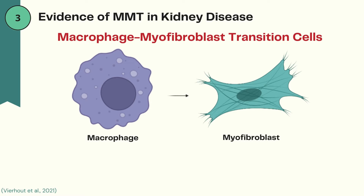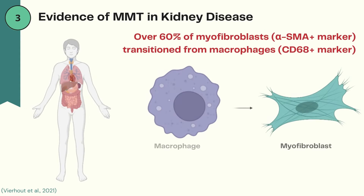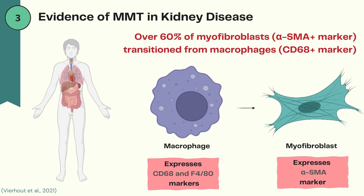Now on to the evidence found in various species of MMT and kidney disease. MMT cells co-express markers of both macrophages as well as myofibroblasts. The markers for macrophages are CD68 and F4/80, and the marker for myofibroblasts is alpha-SMA. In humans with a type of kidney disease that involved fibrosis, it was found that the number of MMT cells were largely elevated. Over 60% of myofibroblasts, or cells with the alpha-SMA marker, were once macrophages with the CD68 marker. The quantity of these cells undergoing MMT was correlated with the severity of fibrosis, as well as kidney function.